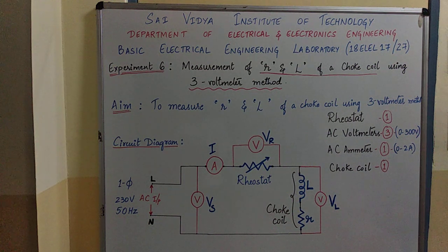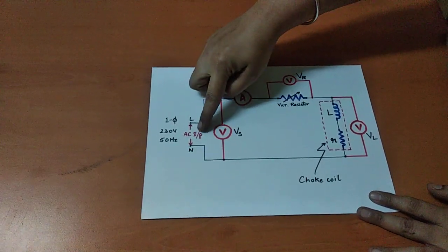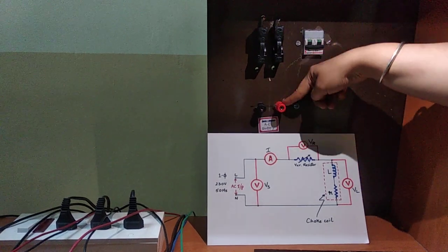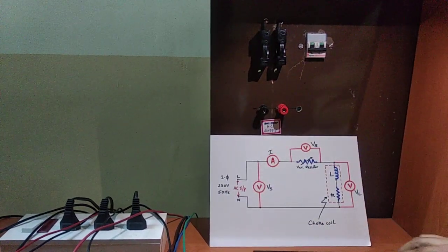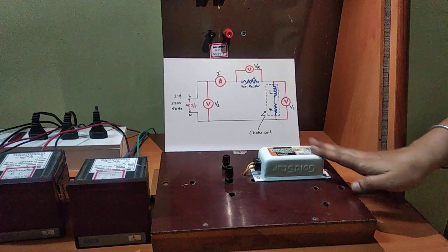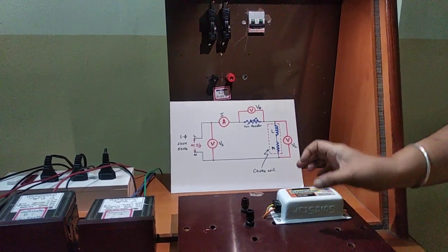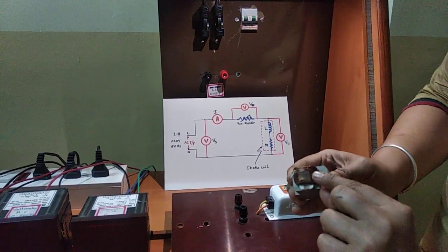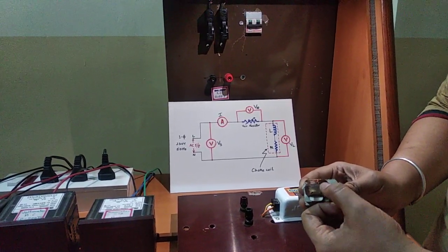Now let us see how to rig up the circuit practically. As per the circuit diagram, we have input leads with 2 terminals — these are the AC single phase input terminals, one called the line and the other the neutral. This is the choke coil, generally used in fluorescent tubes. If we cut open this, the cross section of the choke coil shows a number of wires wound up. We are learning to measure the resistance and inductance of these coils.